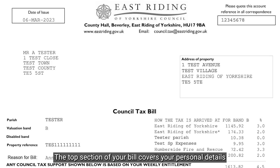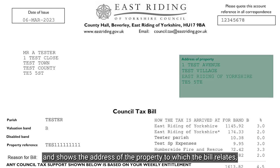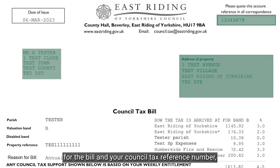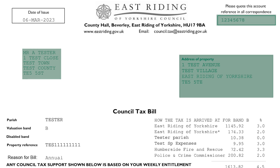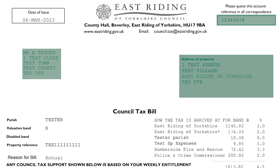Your council tax bill explained. The top section of your bill covers your personal details and shows the address of the property to which the bill relates, the name and address of anybody liable for the bill, and your council tax reference number, which you will need to quote whenever you contact the council or make a payment.